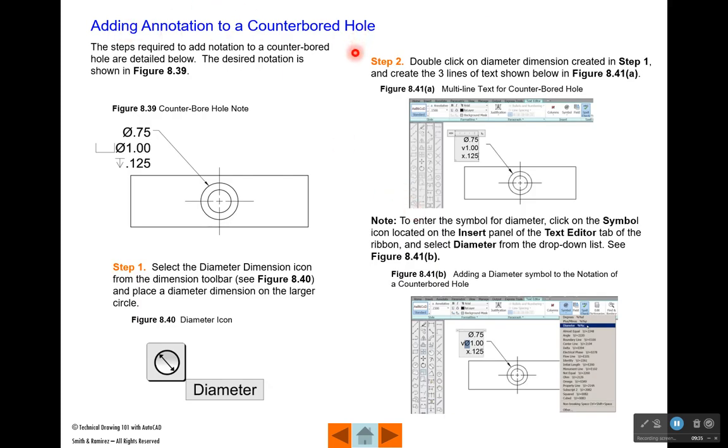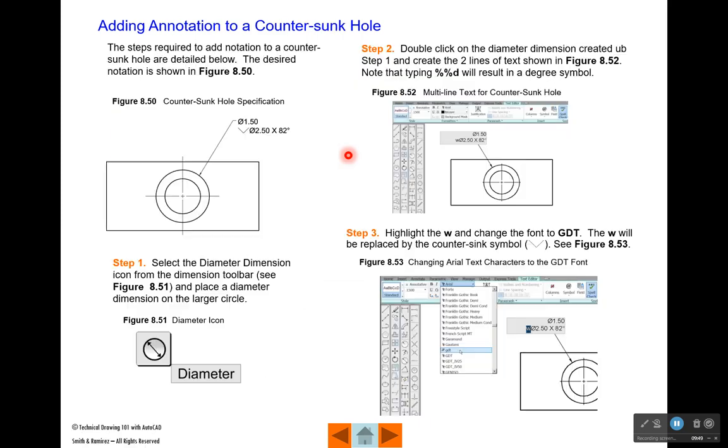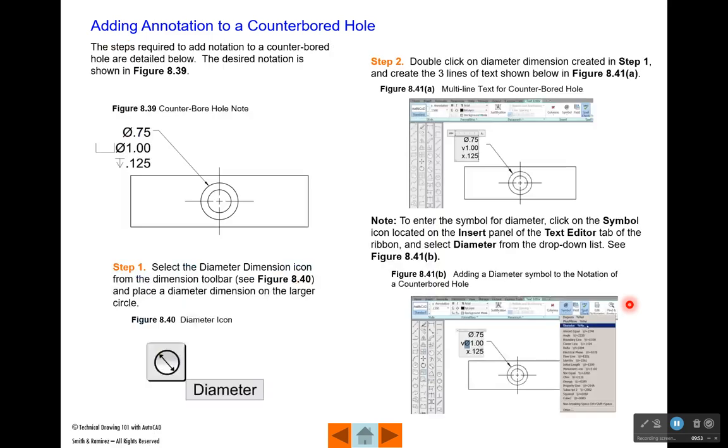When you add annotation to the counterbored hole, you want the annotation to look like this. There are steps that you're going to follow - Step 1, Step 2, Step 3. The same goes for the countersunk hole which is over here. We have placed a help sheet in Blackboard in the area of the step where it shows about dimensioning. This will guide you to this handout, but this is also in your book. It shows you how to add these lines of text. Essentially what you're going to do is use the diameter tool that you use in dimensioning and point to one of the circles that you have. Then edit the text so that you wind up with three lines of text that says diameter 0.75, then a lowercase v with a 1, and a lowercase x with a 0.125.